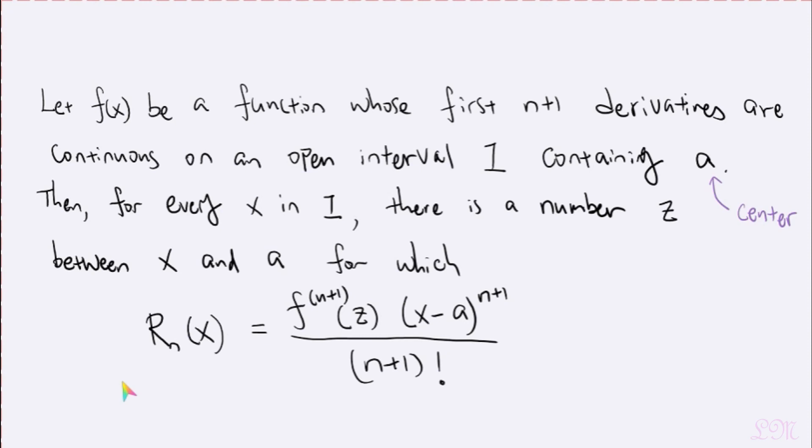By the way, another notation issue here, lots of people prefer using letters c over z. And the R sub n of x is still the remainder. And the absolute value of that is still the size of the error. And by the way,